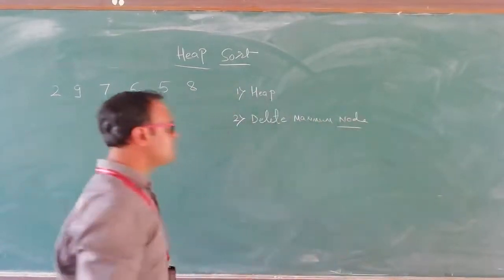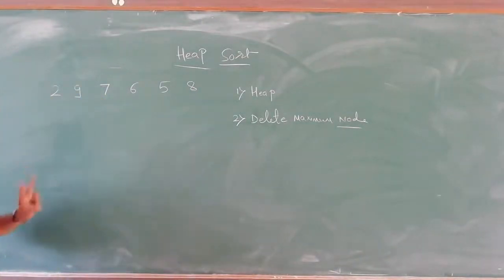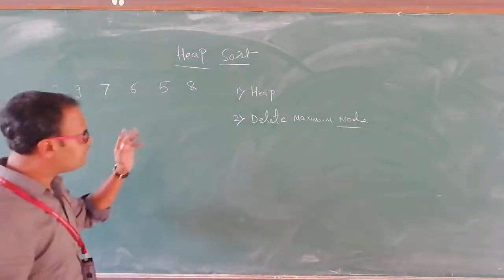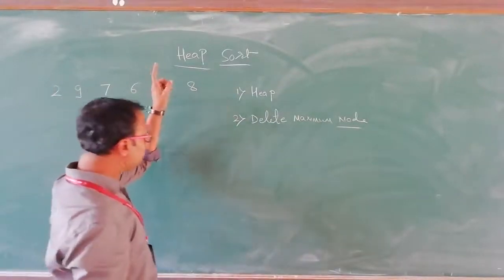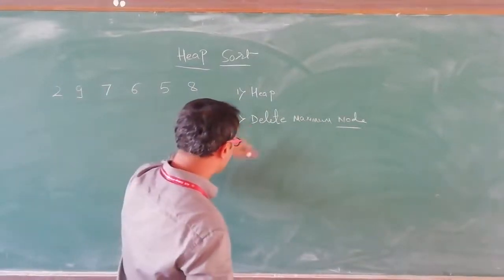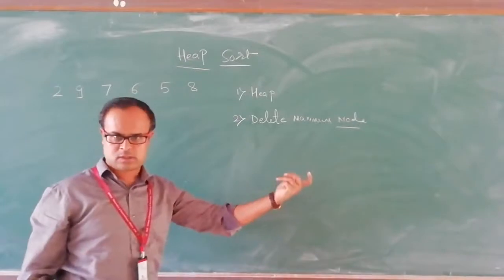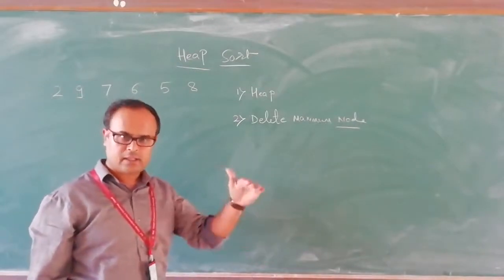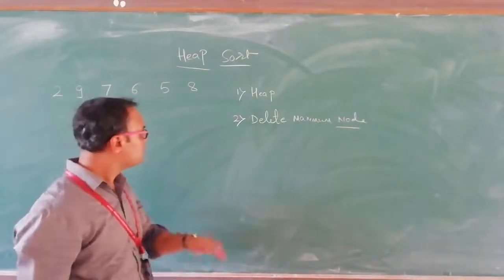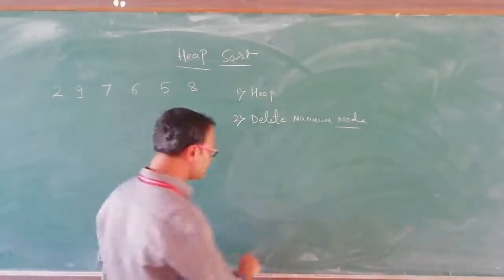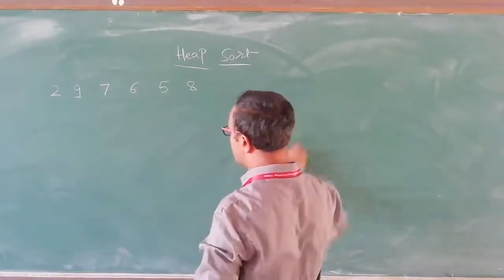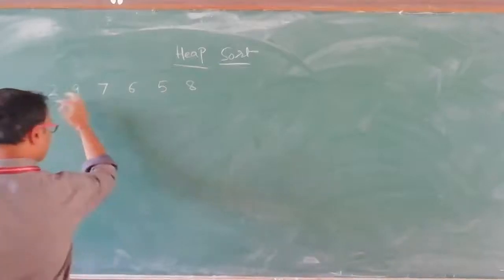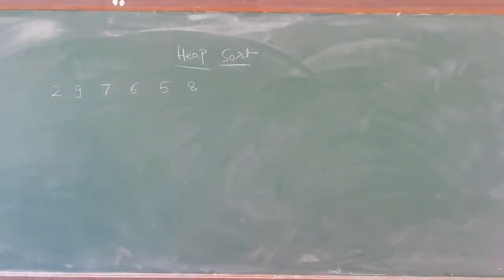Heap sort works in two different stages. In the first stage it creates a heap from given data, and in the second stage it goes on deleting maximum nodes, one at a time in every iteration. So let us see how it works. The first thing we have to do is construct a heap from the given data — we have already done this in a previous class, but we will see it once again.